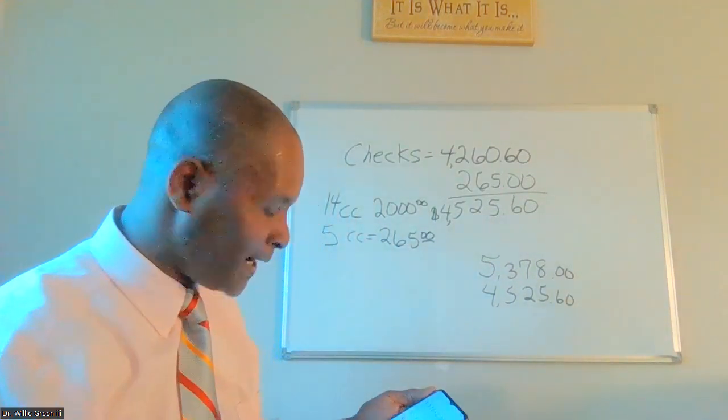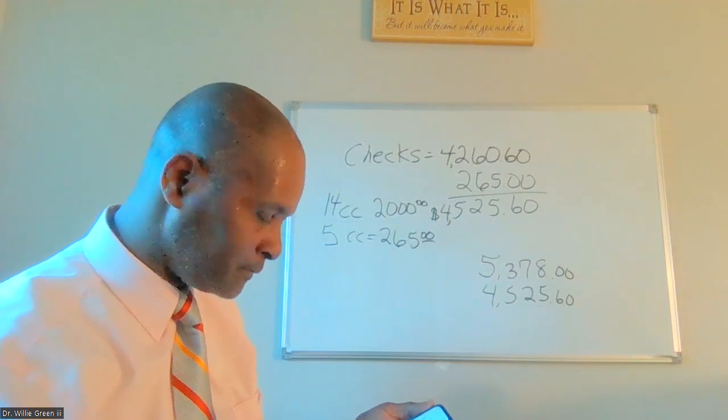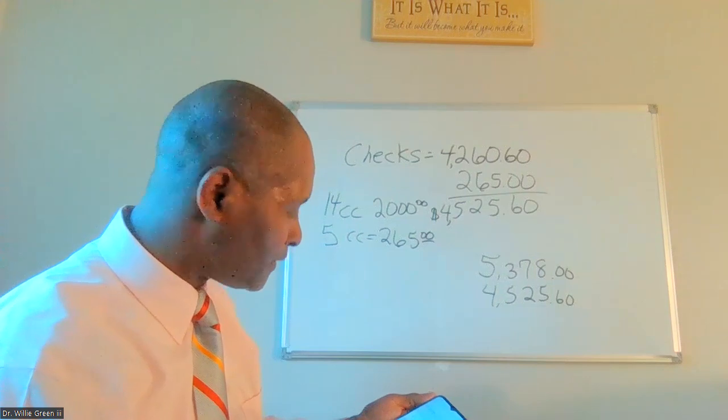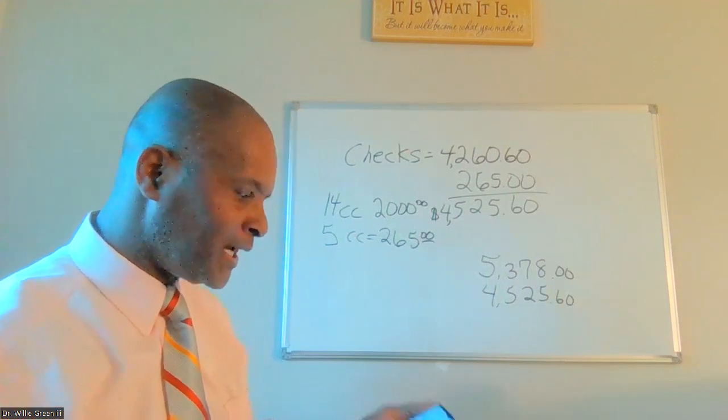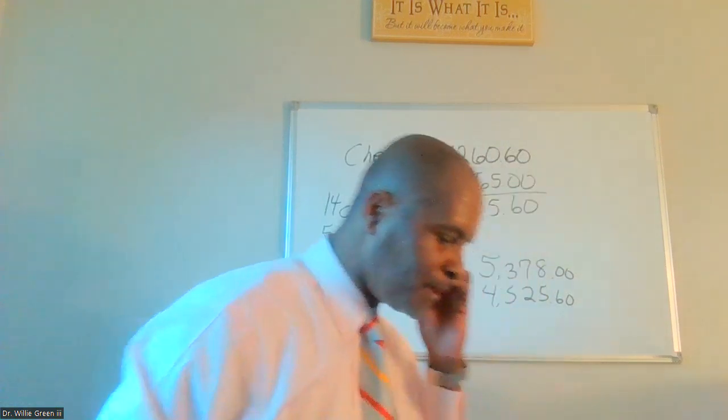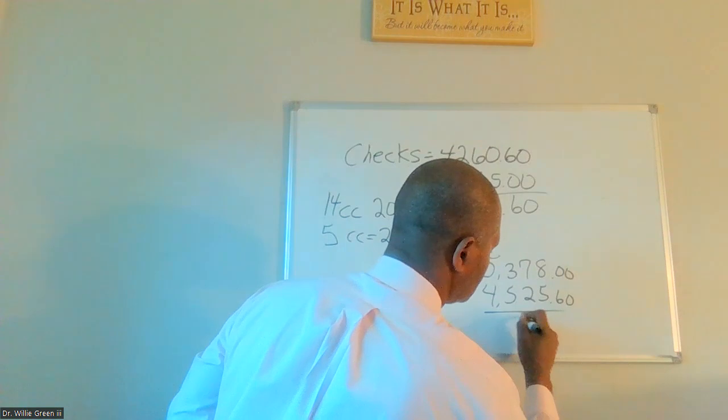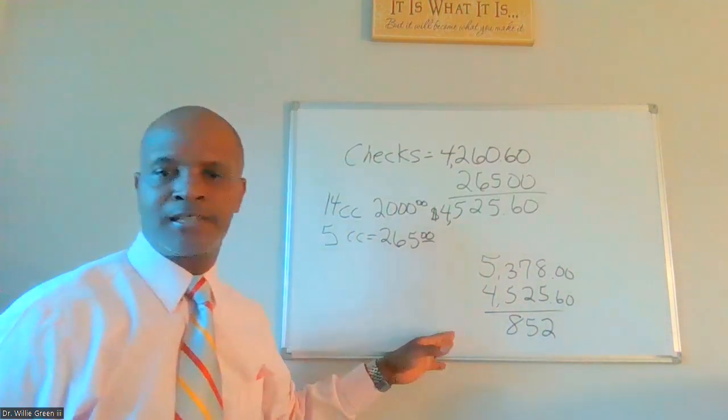So $4,525 was going into the HELOC for bills. My total income $5,378 from $4,525.60. So that should leave me with some cash flow that's sitting inside of the HELOC. That leaves approximately $852.